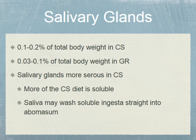I want to focus on salivary glands. In concentrate selectors, salivary glands consist of 0.1 to 0.2 percent of total body weight. In grazers, the salivary glands only consist of 0.03 to 0.1 percent of total body weight. The conclusion is that salivary glands in concentrate selectors play a greater role because concentrate selectors consume browse species that are high in plant secondary compounds — they have tannins. The salivary glands need to bind those tannins so the concentrate selectors can absorb protein, since tannins inhibit protein absorption in ruminants.